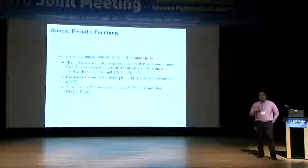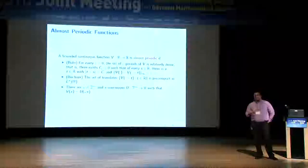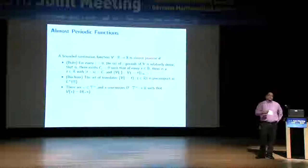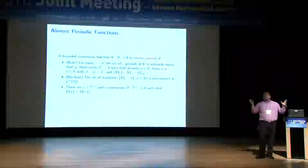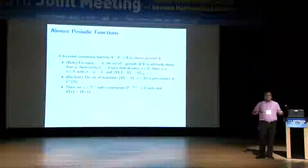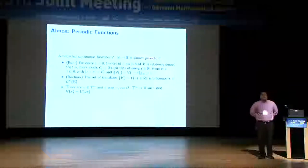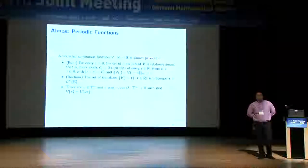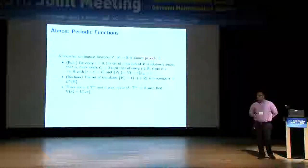When we investigate the Deift conjecture and want to show that solutions are almost periodic in space or time, really what we're thinking of is: we want to find this infinite-dimensional torus, we want to find a translation flow on it, and then find a continuous sampling function that produces the function we want to identify as almost periodic.